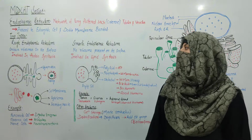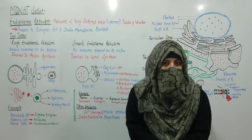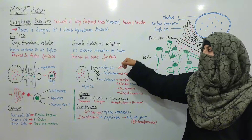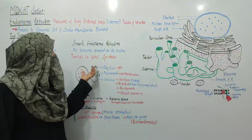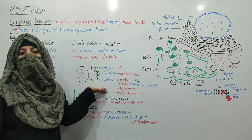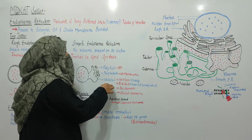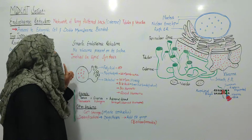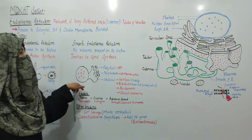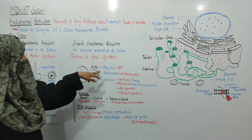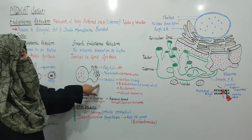Smooth endoplasmic reticulum: where ribosomes are not present. If ribosomes are absent, it means we don't do protein synthesis. What do we do instead? Lipid synthesis — we do lipid formation. In lipid synthesis, the smooth ER produces fatty acids, phospholipids, and cholesterol.